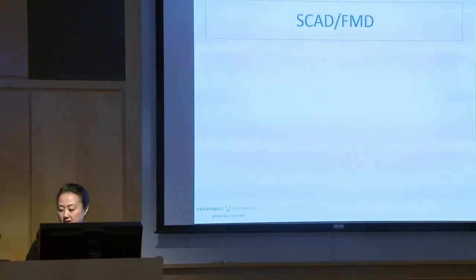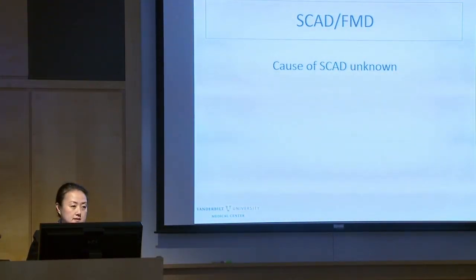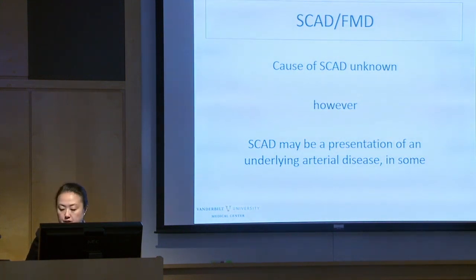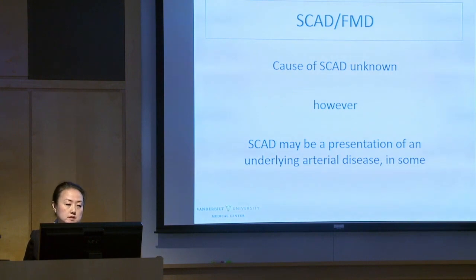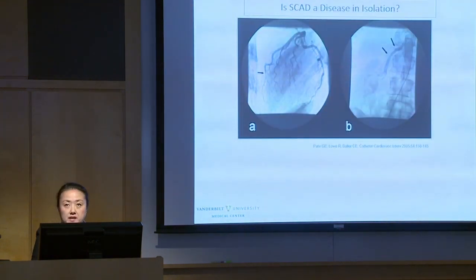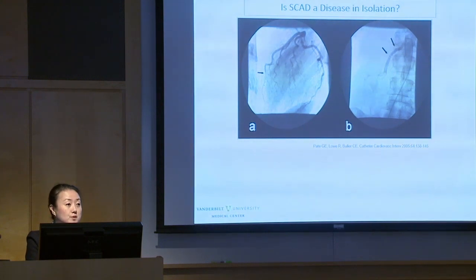I'm going to share some basics of the extra-coronary pieces of coronary dissection. The cause of SCAD is unknown; however, SCAD may be a presentation of an underlying arterial disease in some people. This word 'arteriopathy' means disease of the arteries — a predisposition for arteries to be weakened and to form blockages, tears, and aneurysms. We have to ask: is SCAD a disease in isolation, something that just affects the heart?